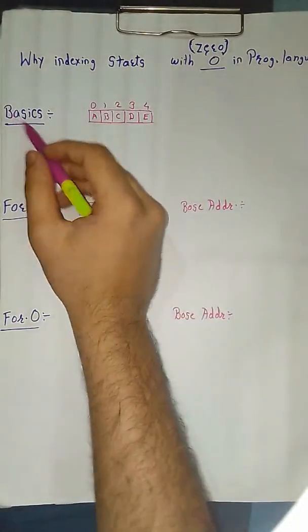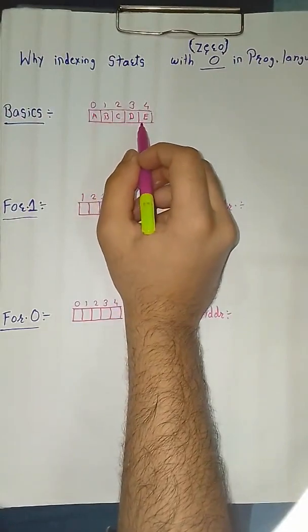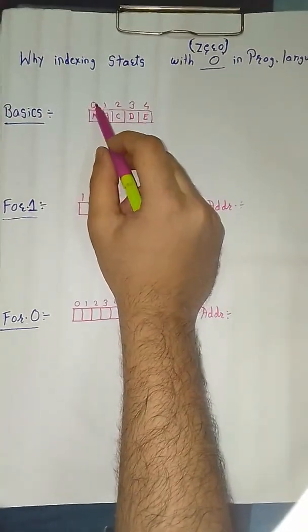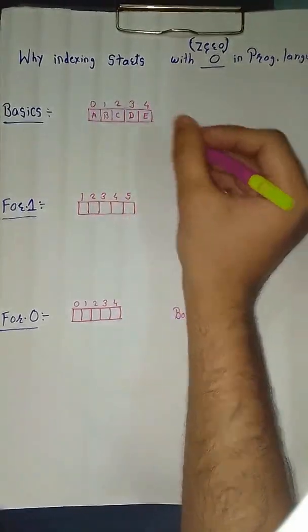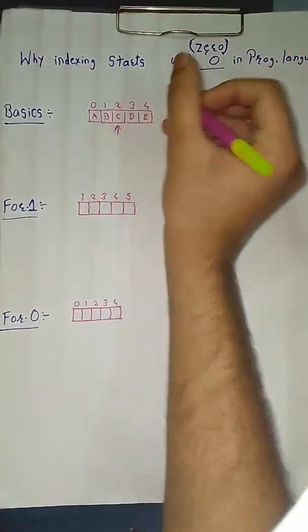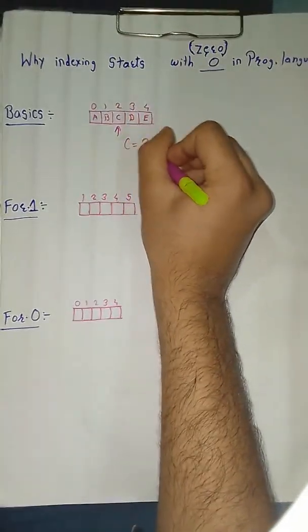For this, let's see the basics. Suppose we have given an array of a, b, c, d, e elements and we all know that the indexing starts from 0, 1, 2, 3, 4. If someone says you to access the c element, you will say that the index is 2.